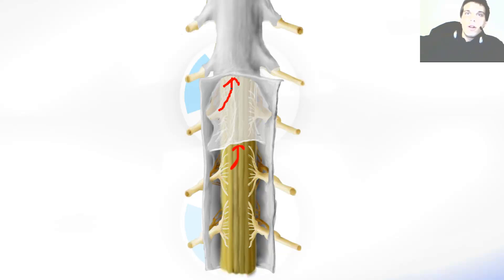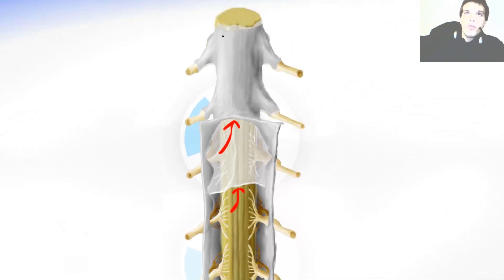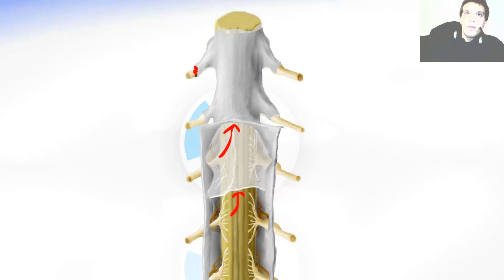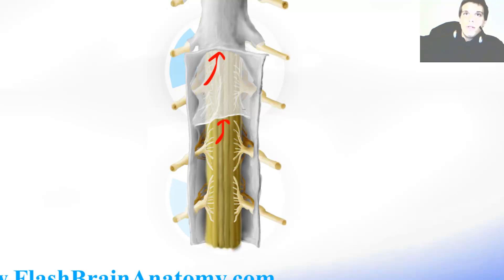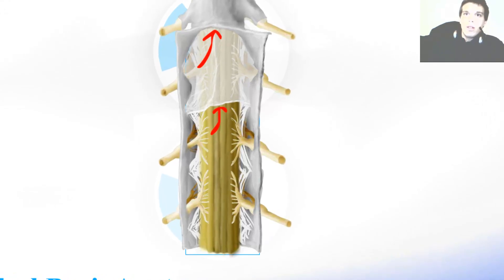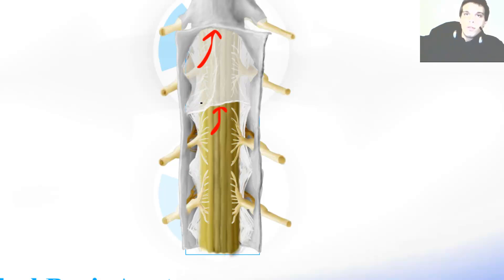The space between the dura mater and the arachnoid mater is called the subdural space. The pia mater and arachnoid mater together create the endoneurium, and the dura mater creates the perineurium and epineurium of the peripheral nerve. Between each exit of a spinal nerve, on the dura mater there is a denticulate ligament — it is simply pia mater that leaves the surface of the spinal cord and attaches to the dura mater between two spinal nerves.